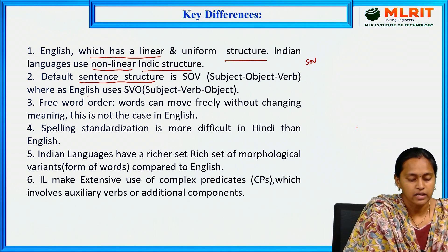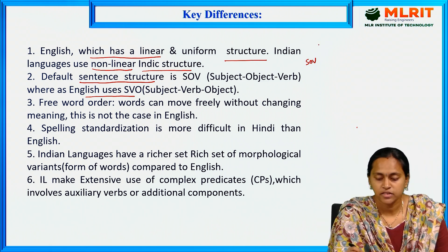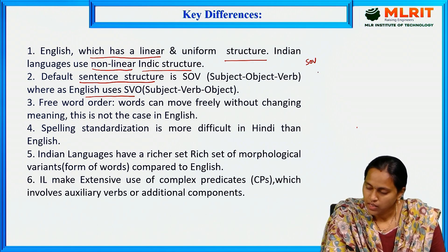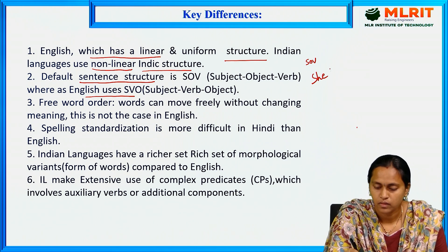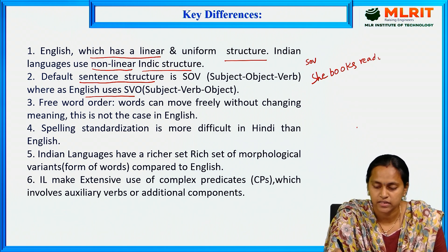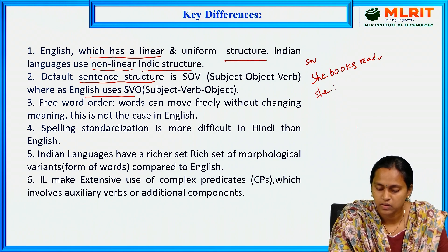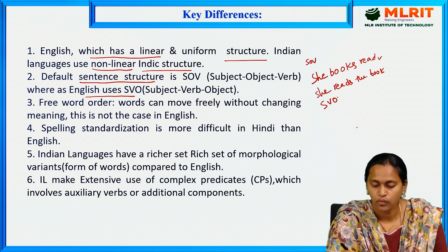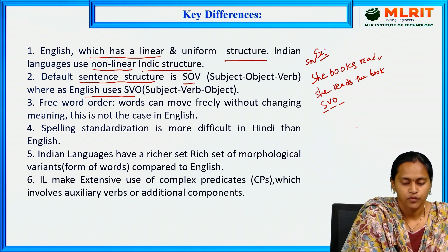English uses SVO — Subject, Verb, Object. For example, in Indian languages the sentence would be 'she books read' — that is the nonlinear, SOV structure. The actual English SVO structure is 'she reads the book.' This illustrates the difference between SOV and SVO.